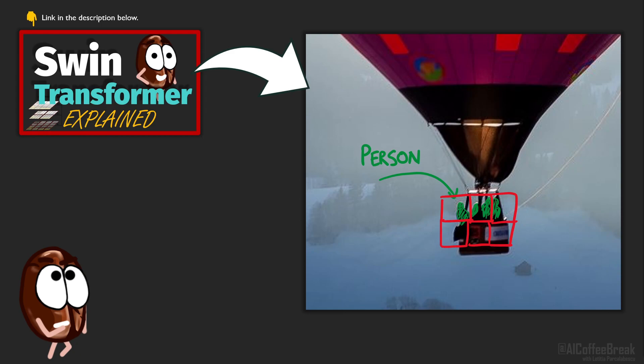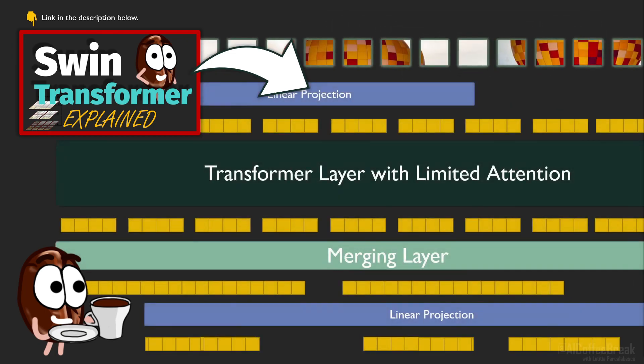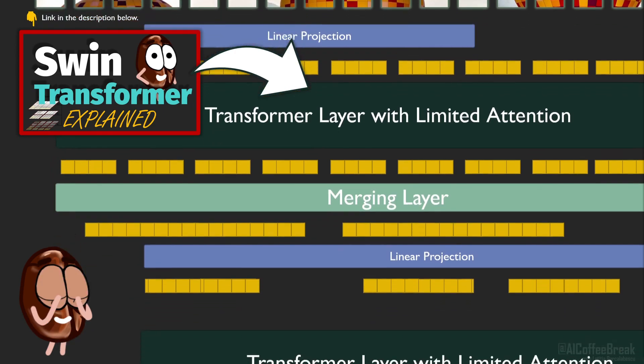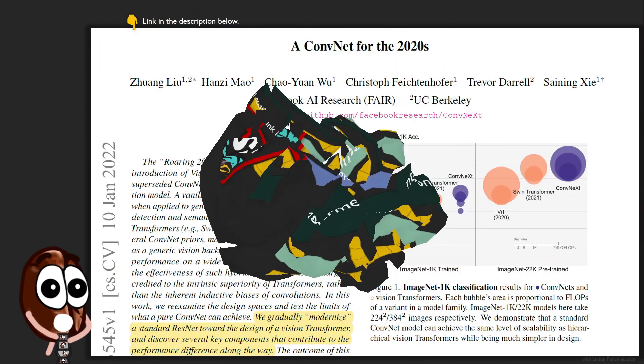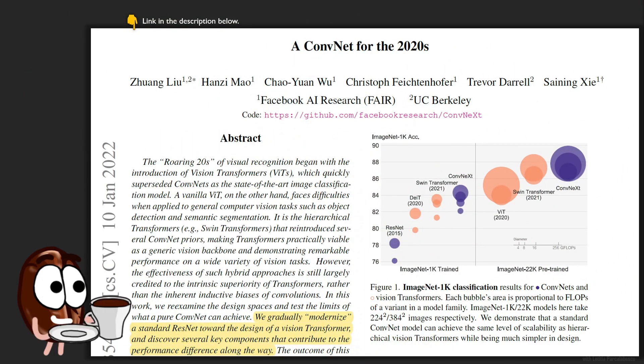So how to compare ConvNets and Transformers and make it fair? Sometimes Transformers steal from ConvNets, I'm looking at you Swin Transformer with your hierarchical processing, and the credit for the performance gain goes to the Transformer. But what about reversing the roles, letting a ConvNet steal from a Transformer?